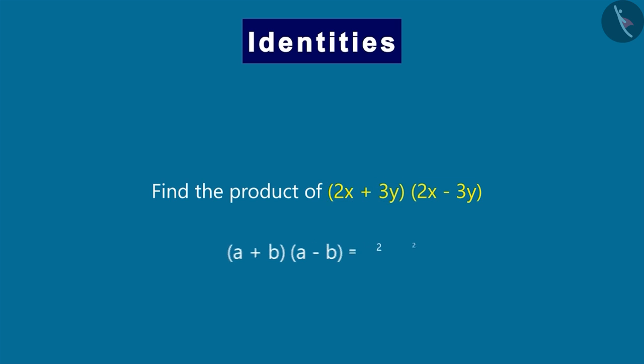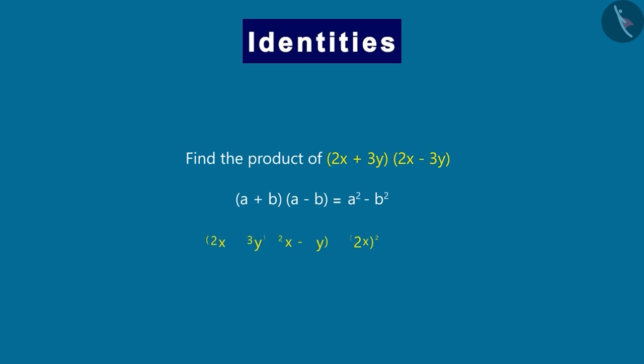Now, you can simplify this by using this identity. The result will be equal to 2x square minus 3y square. And the final answer will be this. Therefore, we can say that by using this identity, we can directly find the product of similar expressions.